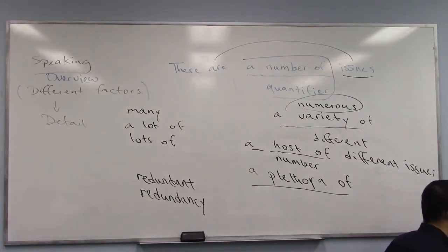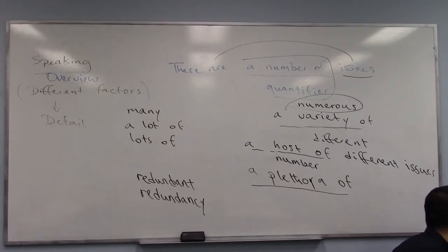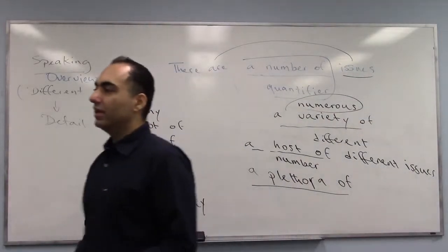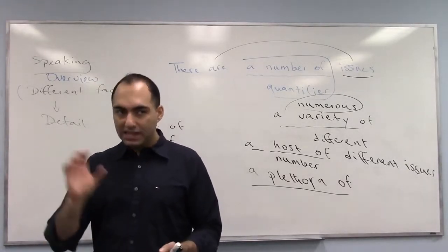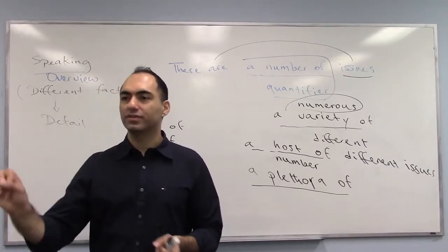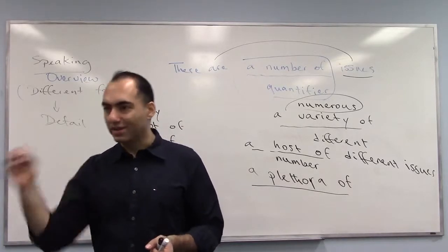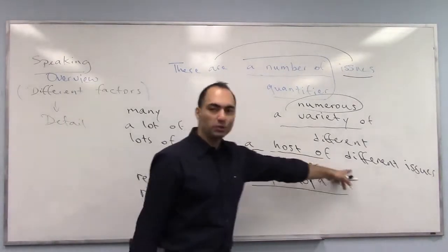What else comes to your mind? Nellie, you can also participate. We have a variety of ways — there are numerous issues, numerous ways. Because when you write, you need to have different ways of saying things. Instead of saying 'there are different ways,' you can say 'there are a variety of ways,' or 'there are a host of issues,' 'a host of different issues.'